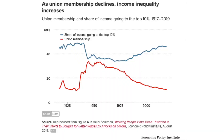Here's another important, very provocative point. The red line shows union density over time — many of you may be familiar with this from the Economic Policy Institute. We're looking at union density in the red line and the share of income going to the top 10% in the top line. What might be less familiar is an accumulating body of research suggesting that the degree of economic inequality makes us sick.